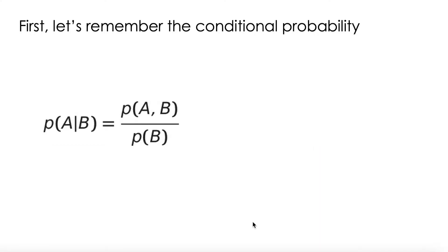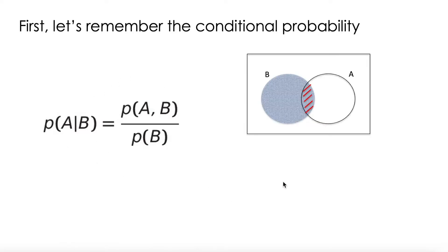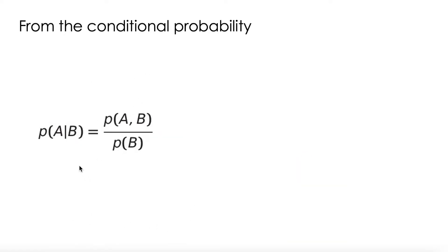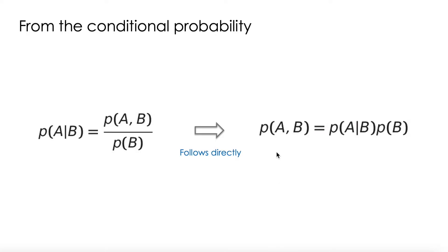Now using just variable names and following the same formulation, the probability of A given B is going to be this expression. We can use the same diagram to express what it means. So why are we using this formulation? Because we are going to connect this probability of A given B to our posterior, which is also a conditional probability. From the conditional probability, immediately this follows.